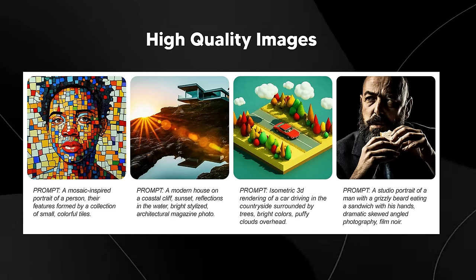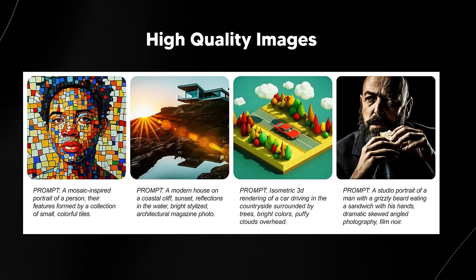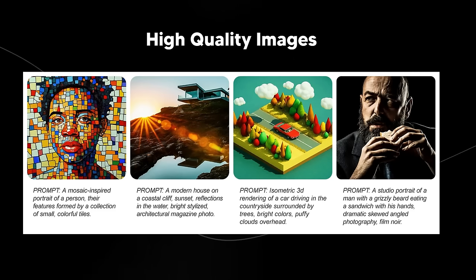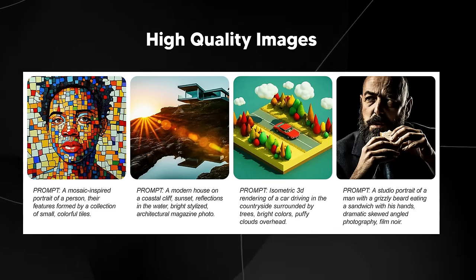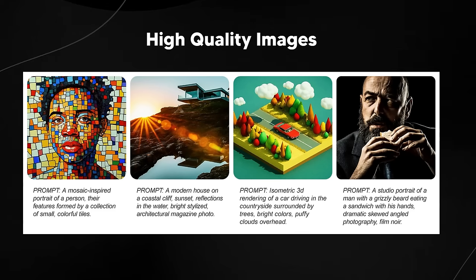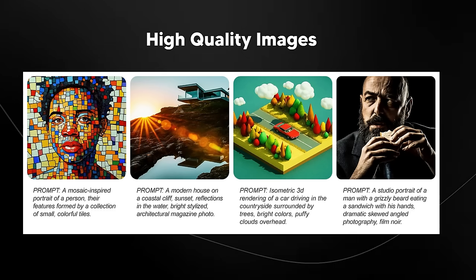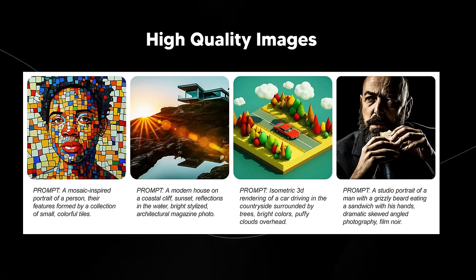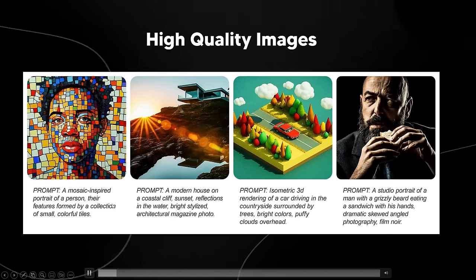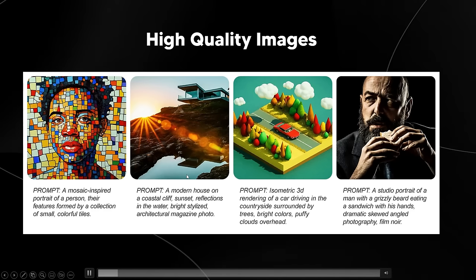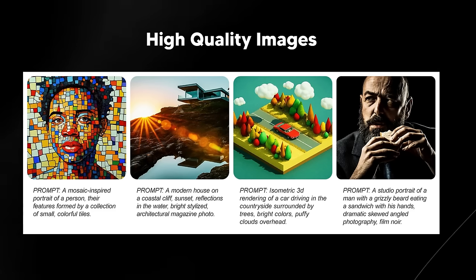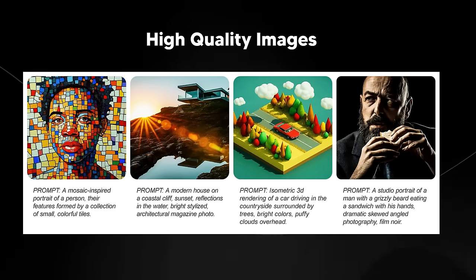We have four high-quality images, and it's clear Google's focus was on photorealism. The images show a mosaic-inspired portrait of a person whose features are formed by small colorful tiles, a wooden house on a coastal cliff, and a studio portrait of a man with a grizzly bear eating a sandwich. These are pretty diverse in nature and show just how good this image generation software is.